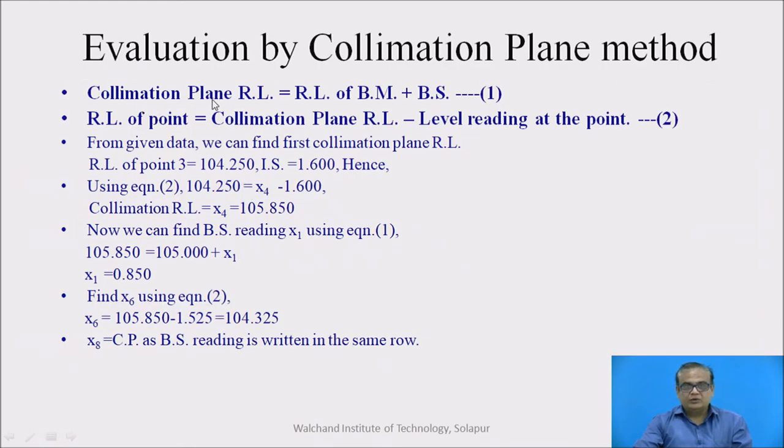We know these relations. Collimation plane RL is equal to RL of benchmark plus backside reading. This is let it be equation 1. And RL of any point is equal to collimation plane RL minus level reading at that point. This is also known to us. Let this be equation 2.